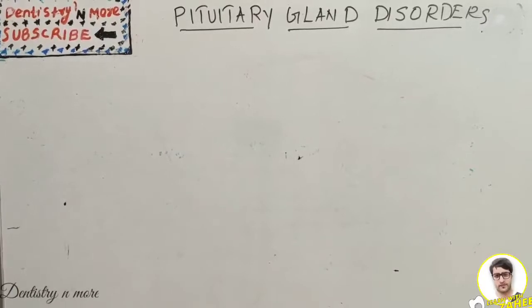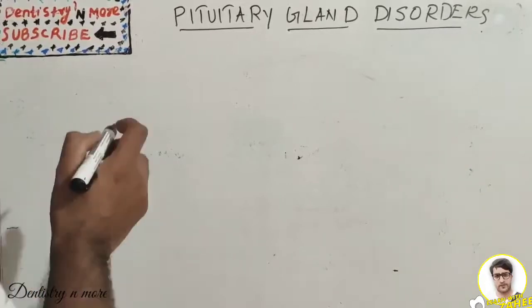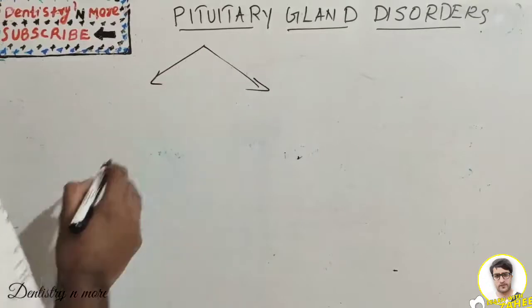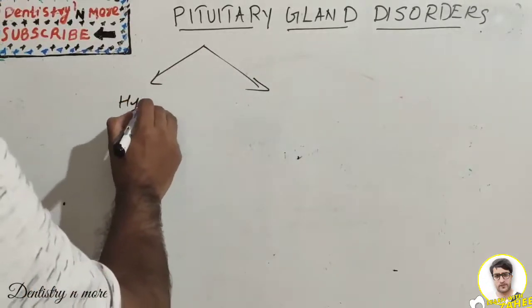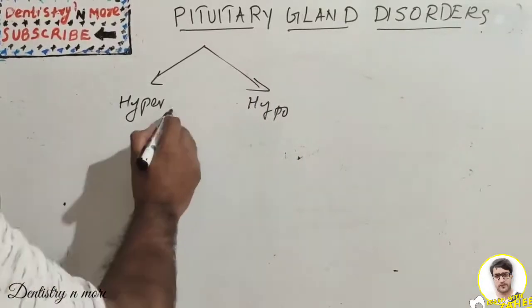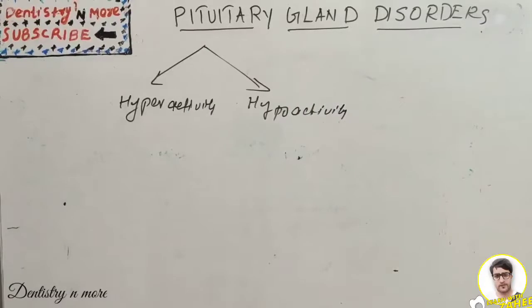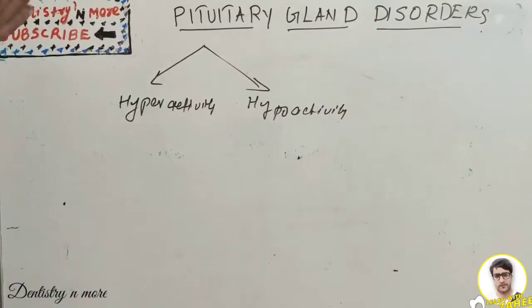Welcome back to another session in Dentistry and More. Last session we covered thyroid gland disorders in physiology. Today's topic is pituitary gland disorders. The disorders of any gland can be due to two reasons — hyperactivity or hypoactivity. We can classify pituitary gland disorders as anterior pituitary and posterior pituitary, each with hyperactivity and hypoactivity problems.